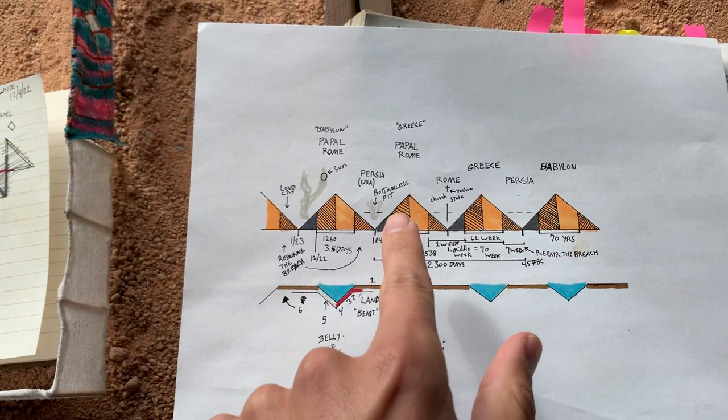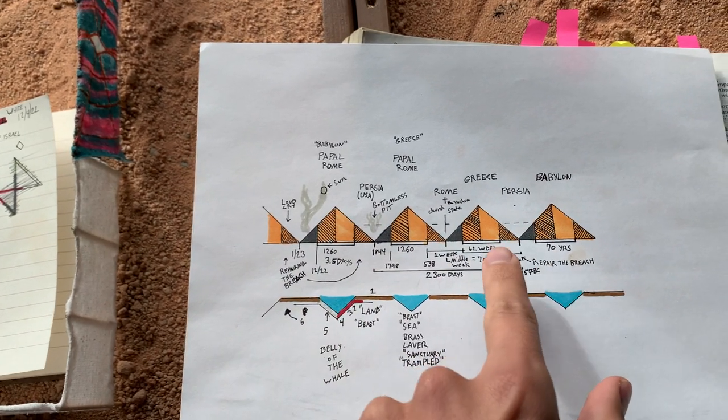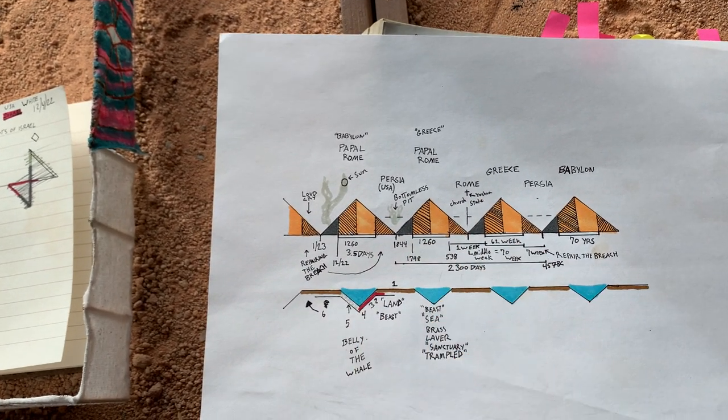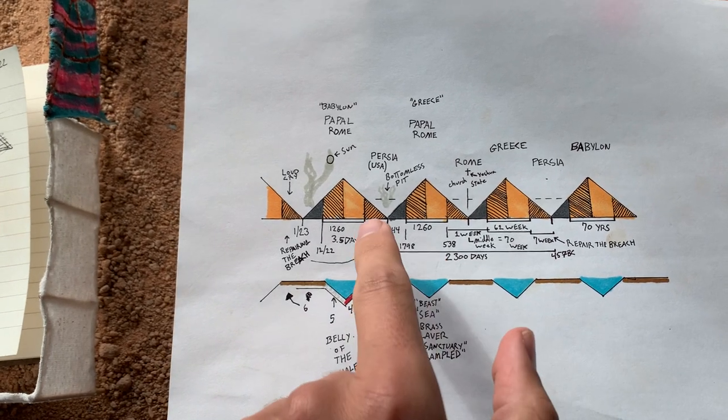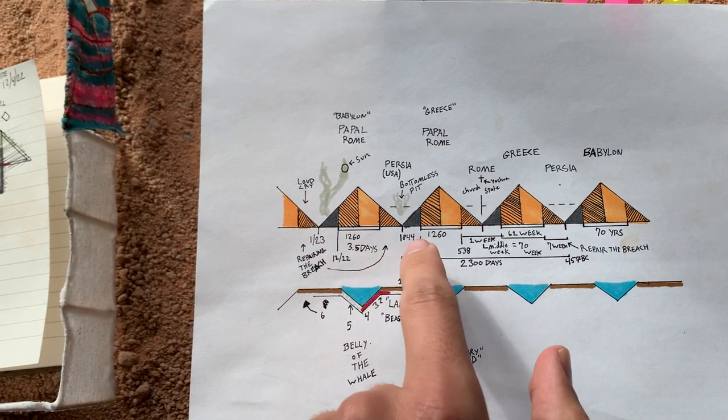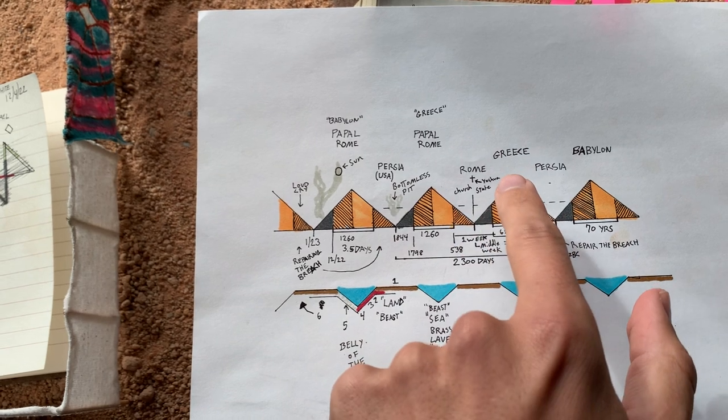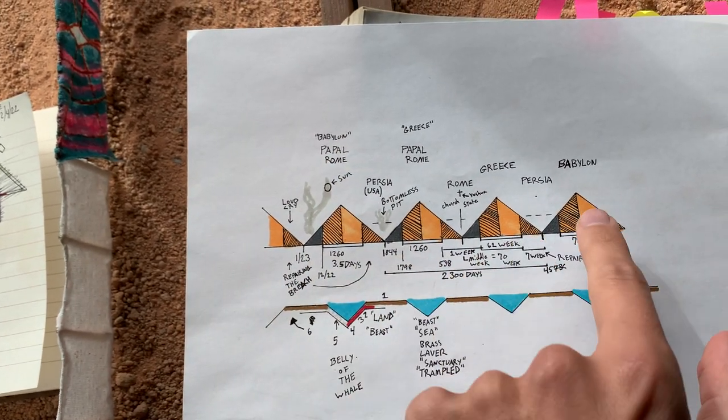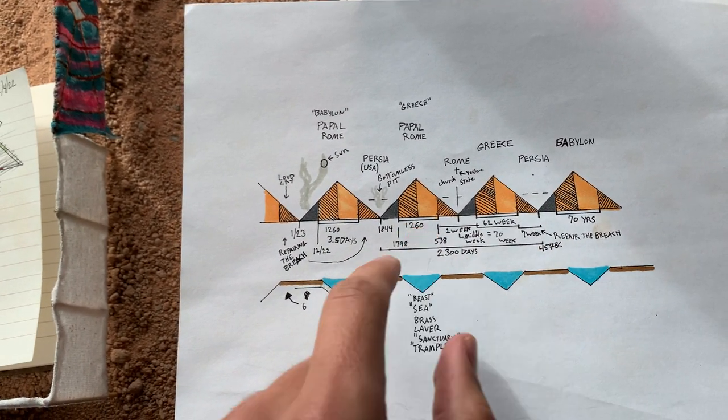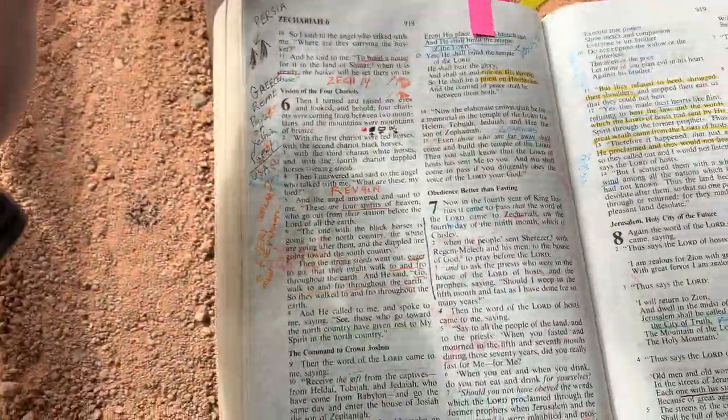This is the four mountains plus the three, you see that, and that's the seven mountains total. But anytime you have a brass mountain, Papal Rome or Greece, or Papal Rome again, or literal Babylon, it's just brass and iron, brass and iron.